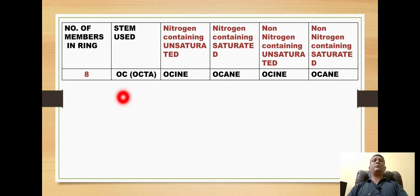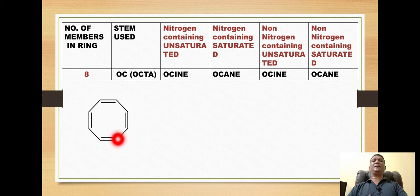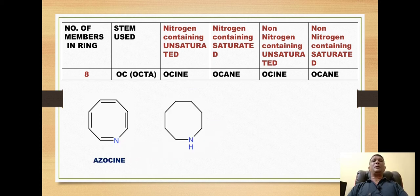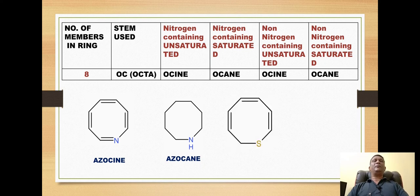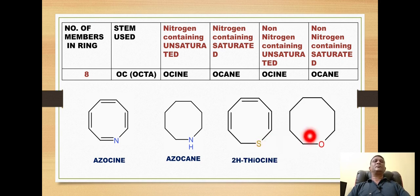For eight-membered rings, we use the stem 'oc', taken from 'octa'. For a nitrogen-containing completely unsaturated eight-membered ring, we use the suffix 'ocine', giving the name 'azocine'. For a completely saturated ring, we use the suffix 'ocane'. For a non-nitrogen unsaturated eight-membered ring, the suffix 'ocine' is used — for example, a sulfur ring gives 'thiocine'. For a saturated non-nitrogen ring, the suffix 'ocane' is used — for example, an oxygen ring gives 'oxocane'.